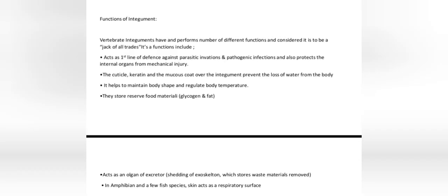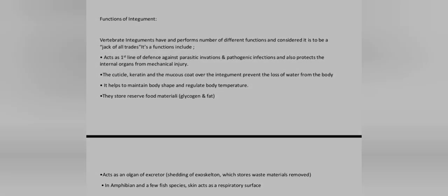Vertebrate integuments perform a number of different functions and are considered a jack-of-all-trades. They act as the first line of defence against parasitic invasions and pathogenic infections, and also protect the internal organs from mechanical injury. The cuticle, keratin and the mucus coat over the integument prevent the loss of water from the body. The integument helps to maintain body shape and regulate body temperature. It stores reserve food materials — glycogen and fat — and acts as an organ of excretion by shedding of exoskeleton which stores waste materials. In amphibians and a few fish species, the skin also acts as a respiratory surface.